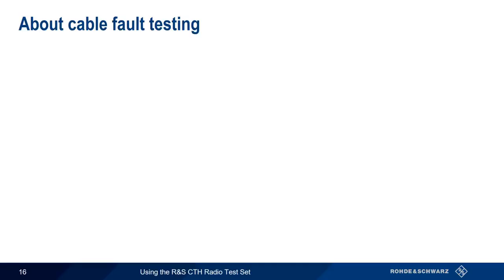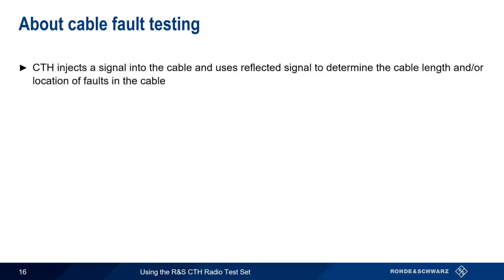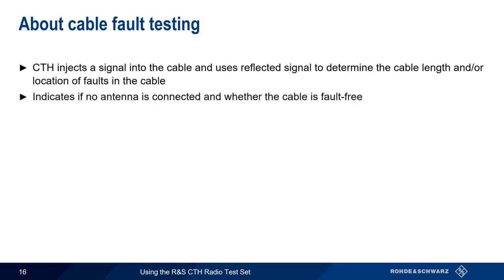Now let's look at Cable Fault Mode. When a cable fault test is run, the CTH injects a signal into the cable under test. The CTH then analyzes the reflected signal to determine the cable length and/or the location of faults along the cable. This is sometimes referred to as a distance-to-fault measurement. The CTH will also detect and display if no antenna is connected, or if there are no faults detected in the cable.